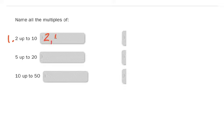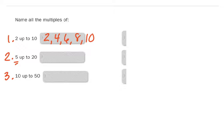So for number one, I would say two, four, six, eight, and ten. Now, would you please write all the multiples of five up to twenty, and all the multiples of ten up to fifty? Go ahead and pause your video and write these on your sheet of paper, or if you have a whiteboard.